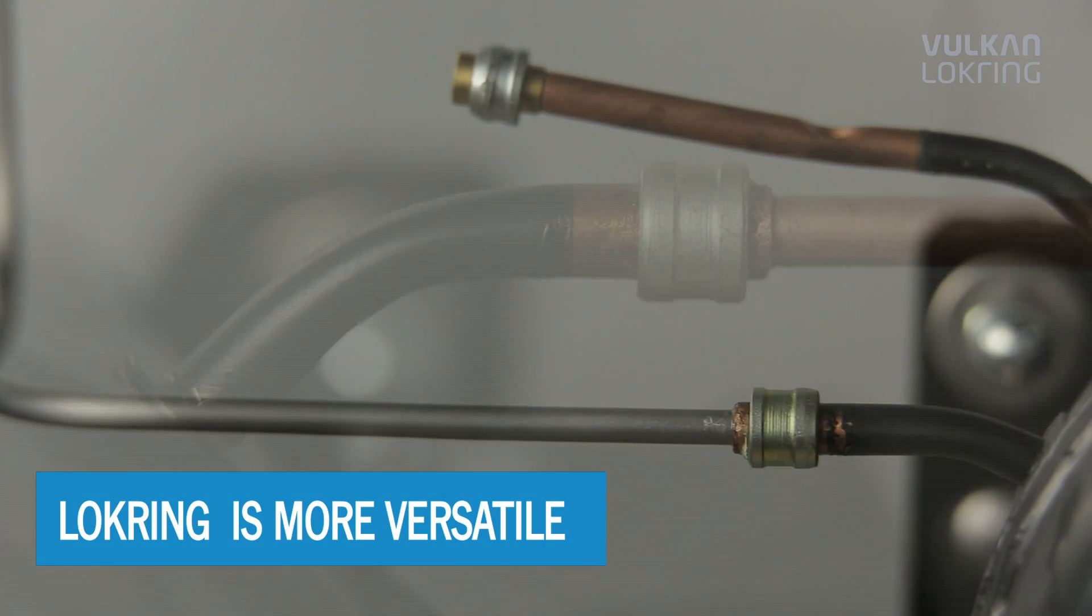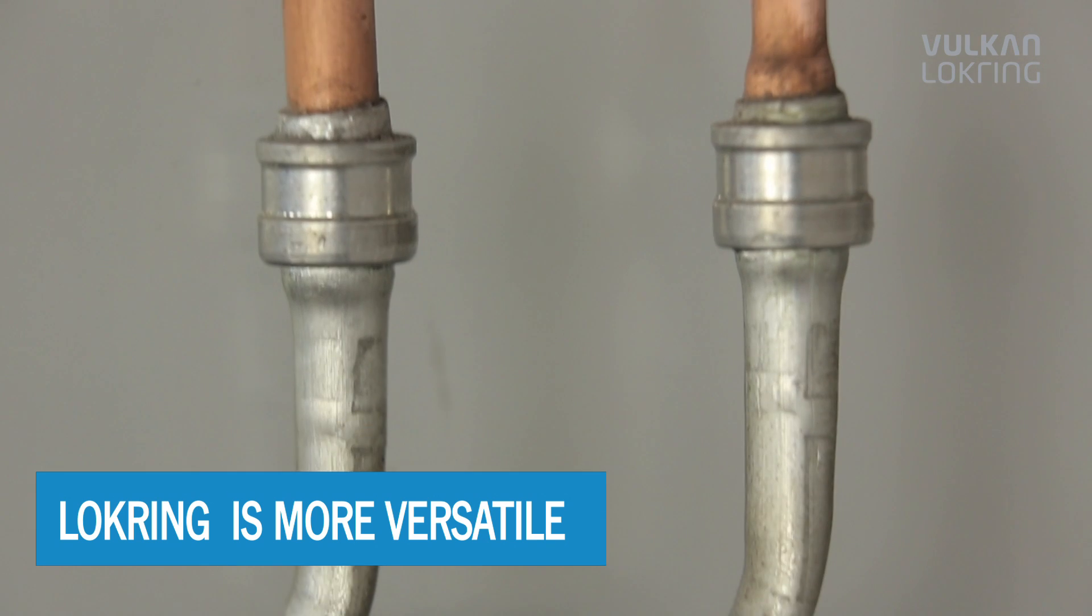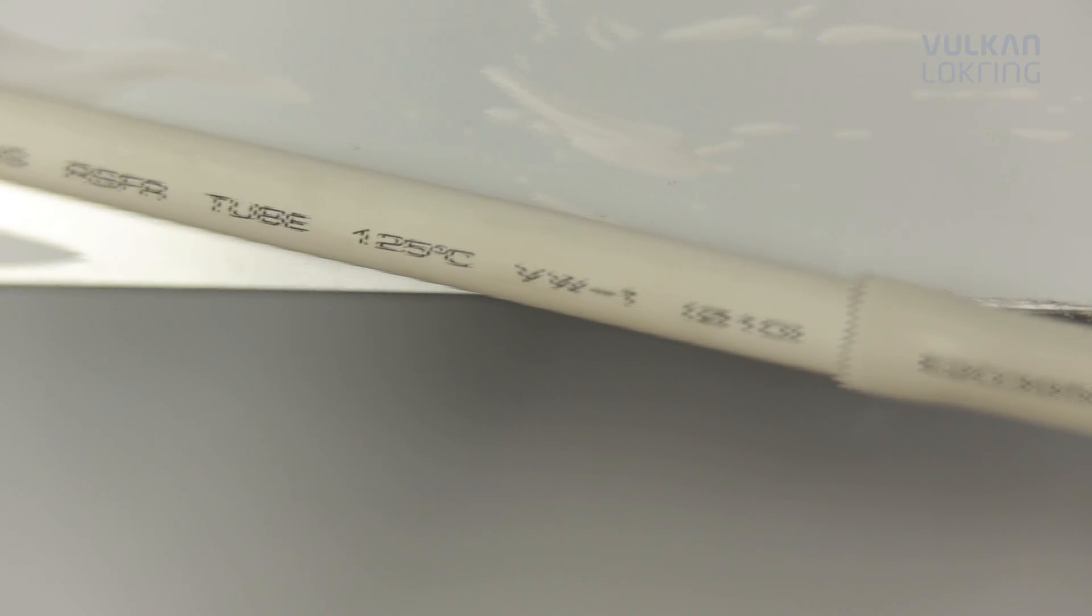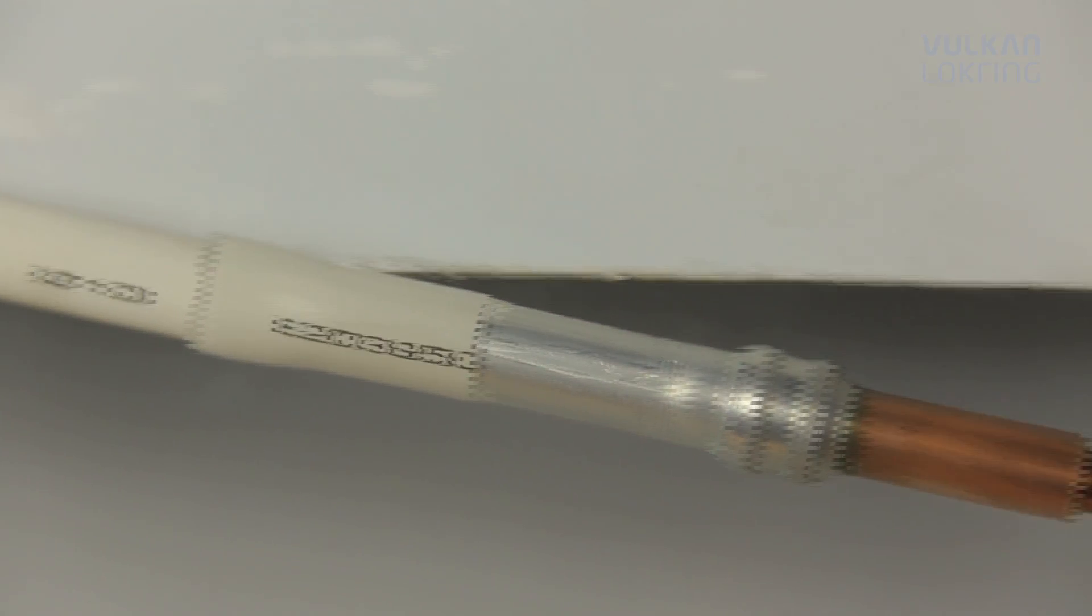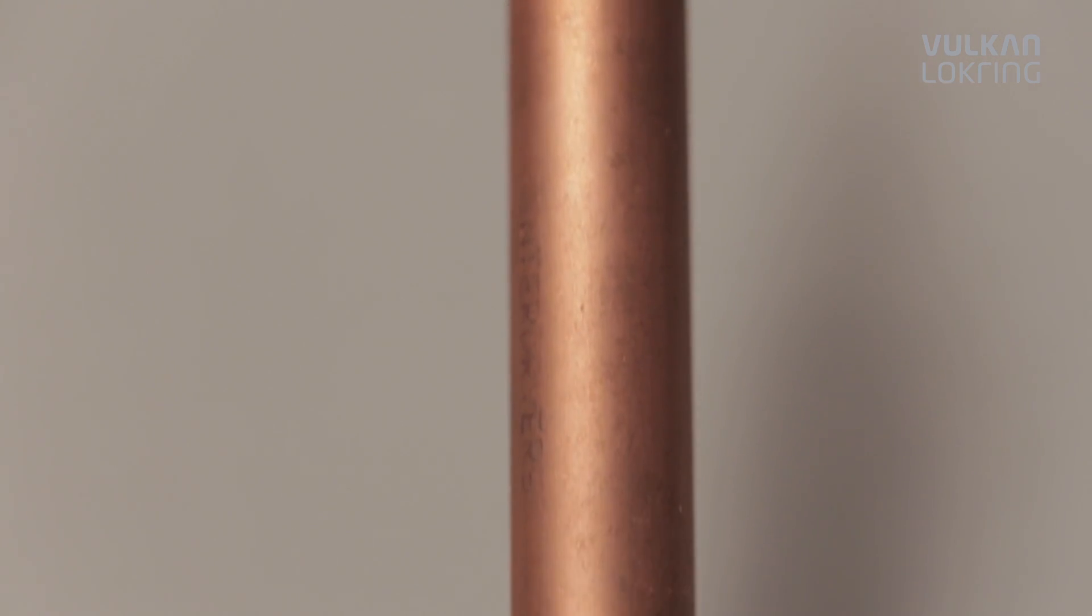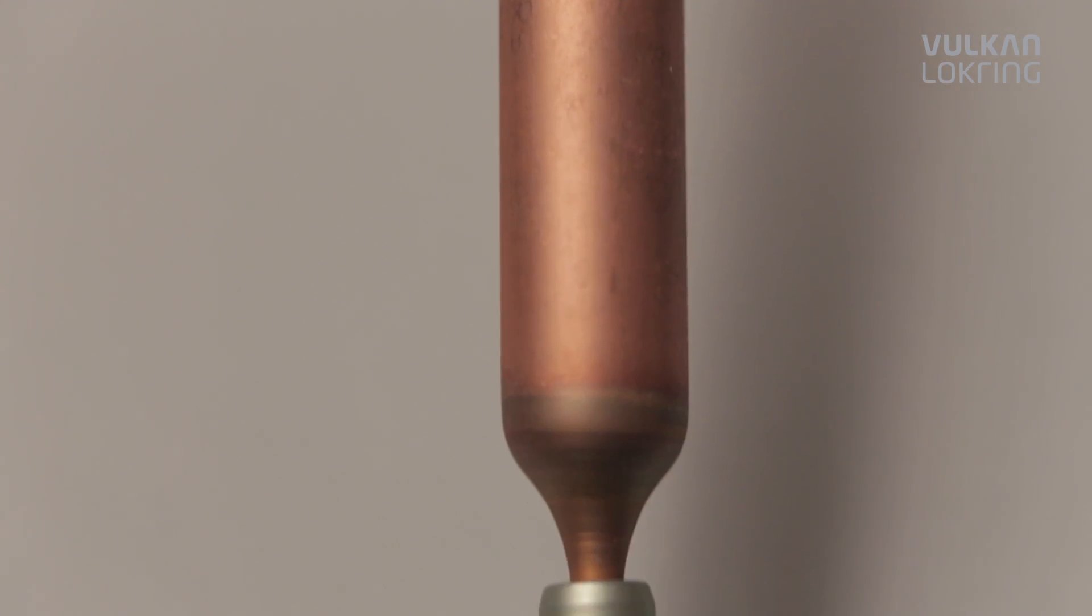As it's the preferred material for brazing, copper is extensively used in refrigerant cycle systems. However, copper is heavy and expensive. By joining lockring, you can finally consider new possibilities.